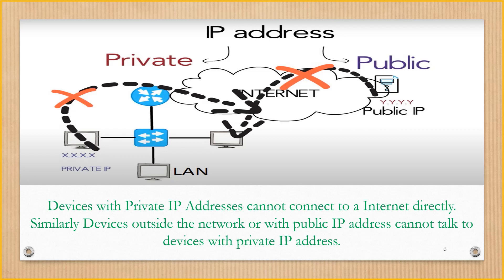Public IP addresses are the ones which are accessible from any publicly accessible network such as the internet. Devices with private IP addresses cannot connect to the internet directly. Similarly, devices outside the network or with a public IP address cannot talk to devices with a private IP address.